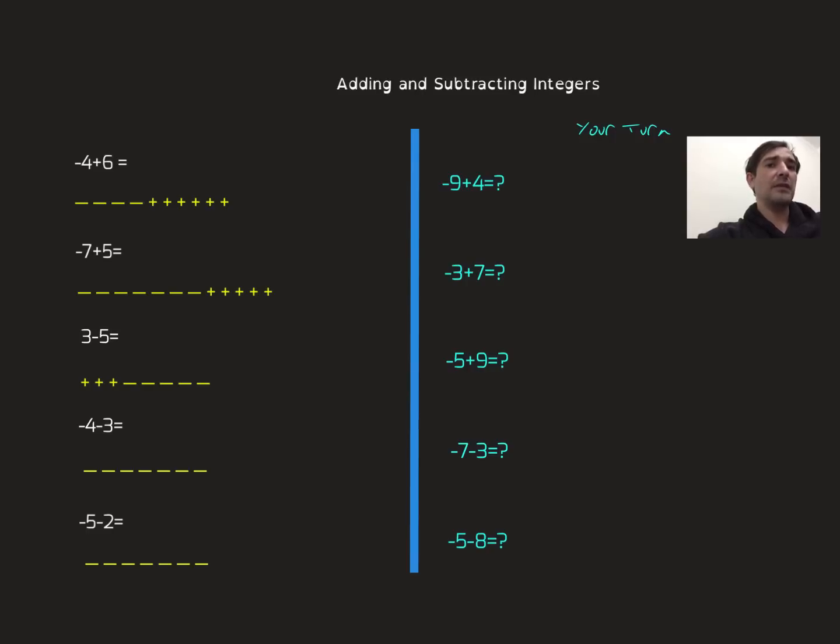Here the technique is this: 1 minus can cancel with 1 plus. 1 minus can cancel with plus, 1 minus with this plus, and this one will be with this one. So how many left? I have 2 plus signs left, so that will be plus 2.